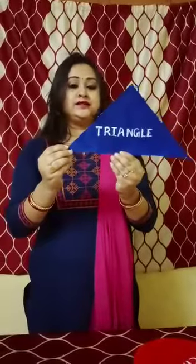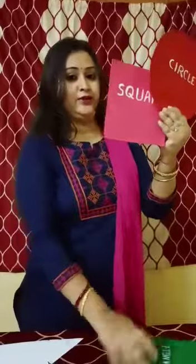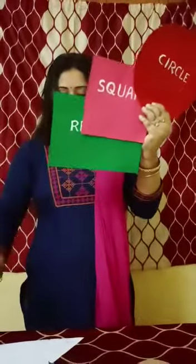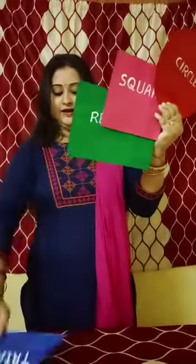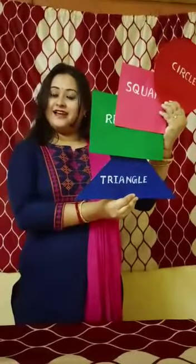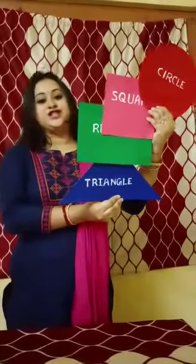Triangle spelling: T-R-I-A-N-G-L-E. So what do we learn? Just repeat. We learned about circle, then we learned about square, then we learned about rectangle, and then we learned about triangle. So these are four shapes.